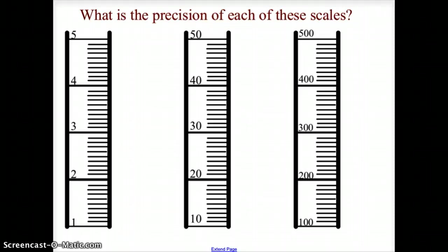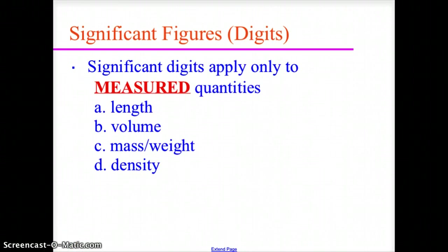When we're dealing with significant digits, it's a measured quantity, and it's based upon the scale of the tool we are using to measure it. When we are talking about significant digits and measured quantities, we are talking about things like length, volume, mass, weight, density — those things that can be measured by a device.